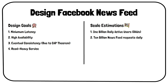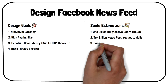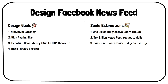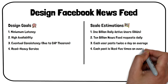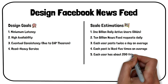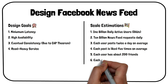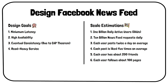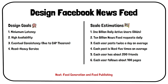On average, each person will post twice a day, each post is liked 5 times, each person has about 200 friends, and follows about 100 pages. At a high level, this problem can be divided into two parts: feed generation and feed publishing.